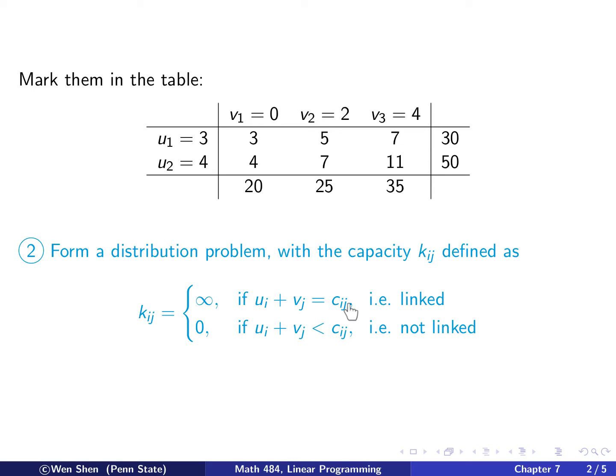That means from the origin oi to the destination dj, there is a link you can ship, and the amount you can ship is unlimited. Otherwise, if ui plus vj is strictly less than cij, then you set the capacity to be 0. This means they are not linked, the oi and the dj, and nothing can be shipped through that.